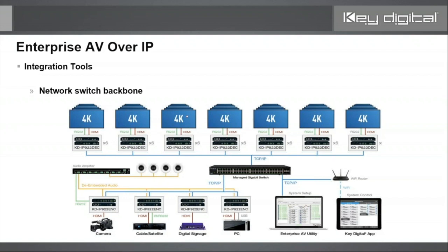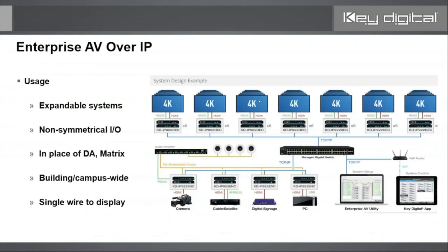AV over IP is very popular right now because it uses the network switch as the center point and backbone of the system. It's very flexible — however many video sources you need, just get one encoder each; however many displays, get one decoder each. In this diagram we've got four sources and 42 displays, so you pick up four encoders and 42 decoders, plug them into your network switch, configure it, and essentially you've built a matrix.